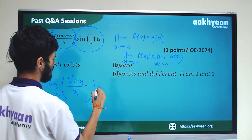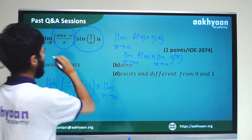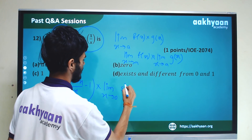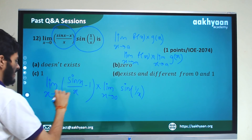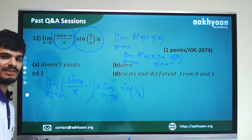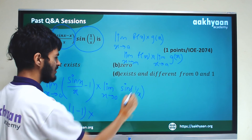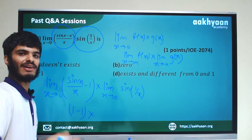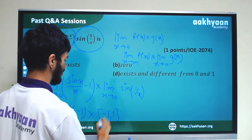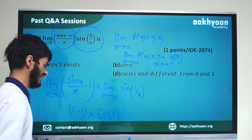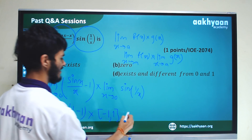We know limit x tends to 0 of sin(x)/x equals 1, so (sin x - x)/x gives (1 minus 1) equals 0. And limit x tends to 0 of sin(1/x) is any value between minus 1 and 1. So 0 multiplied by any value between minus 1 and 1 equals 0.